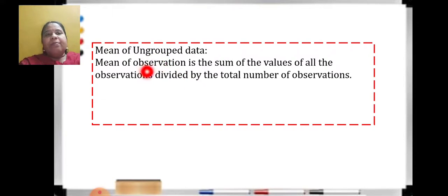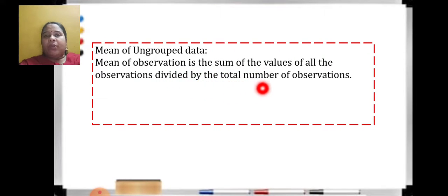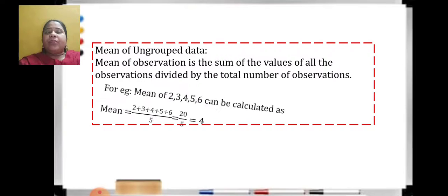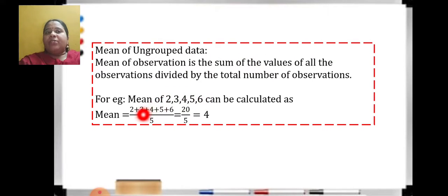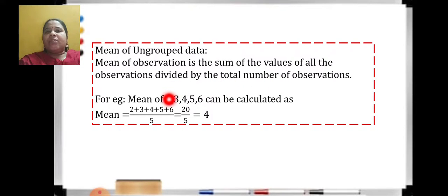When data is ungrouped, mean of observations is the sum of all values divided by the total number of observations. In statistics, average is called mean. For example, to find the mean of 2, 3, 4, 5, and 6: add all observations — sum is 20 — divide by total number of observations, which is 5. So 20 divided by 5 equals 4. This is the way to find mean when data is ungrouped.